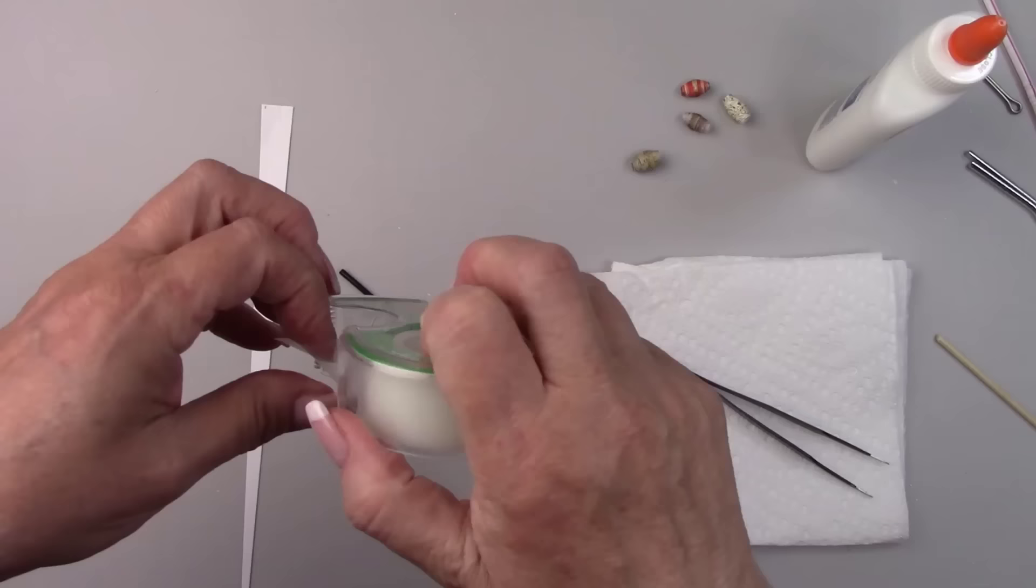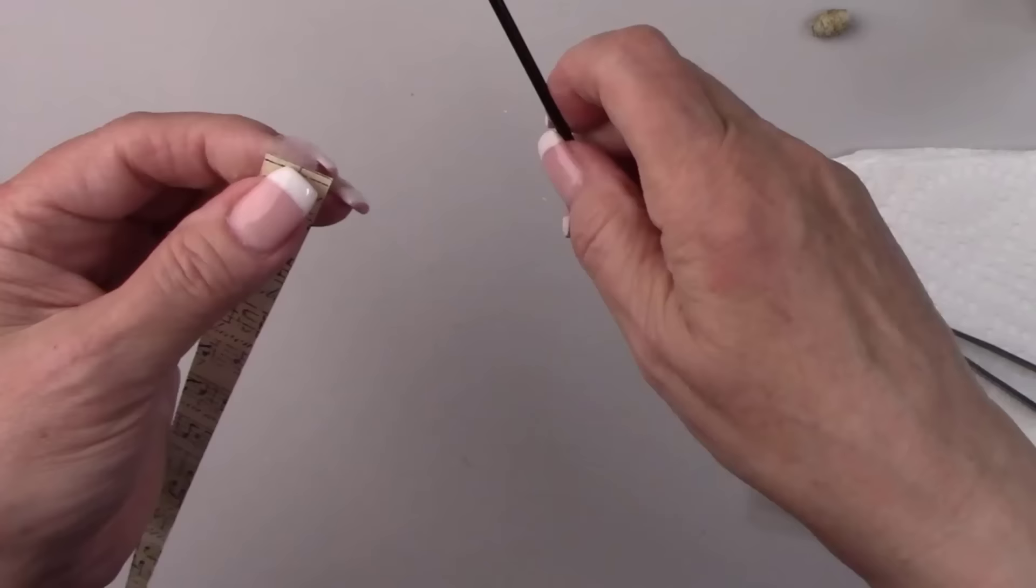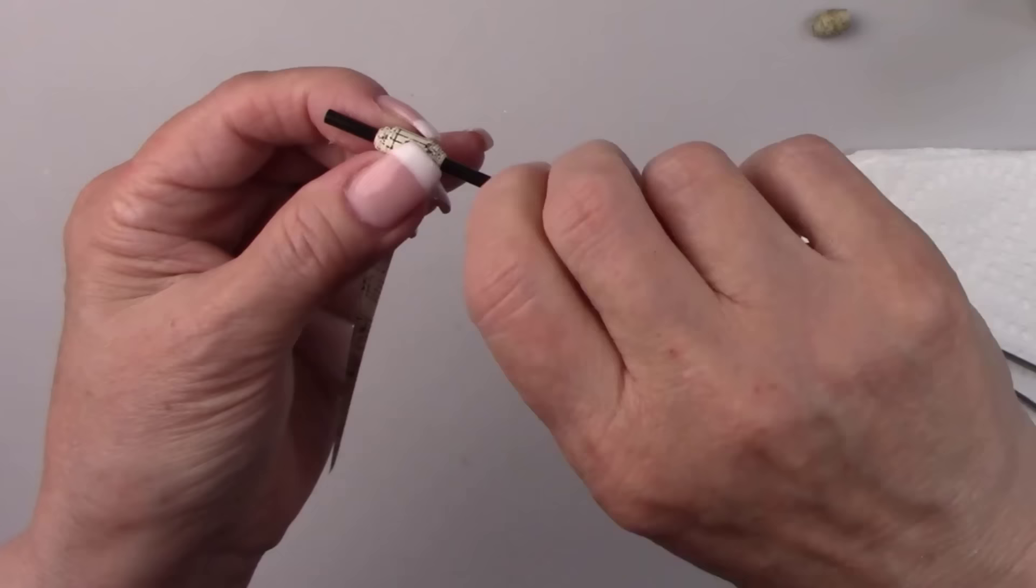A stir stick works really good. I'm taping the paper to the stick, which makes it really easy to roll. When you're done, just snip off the top and the bottom.